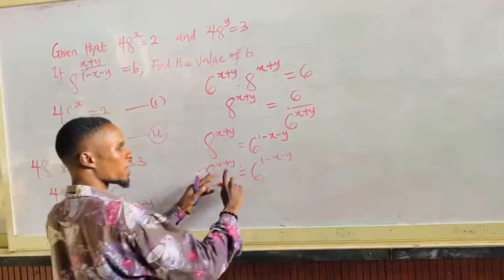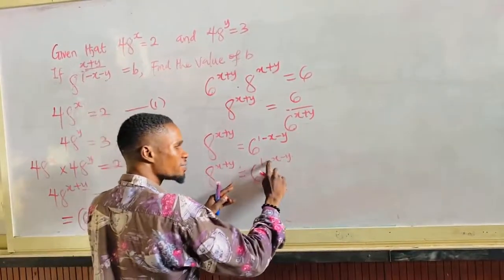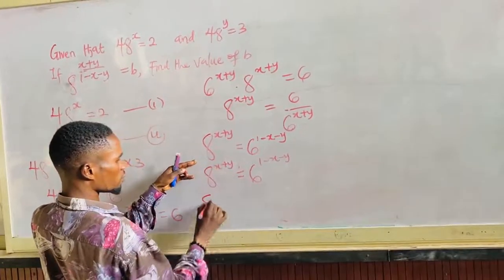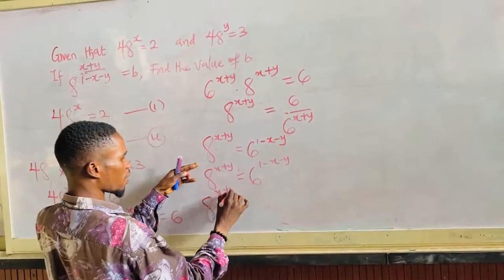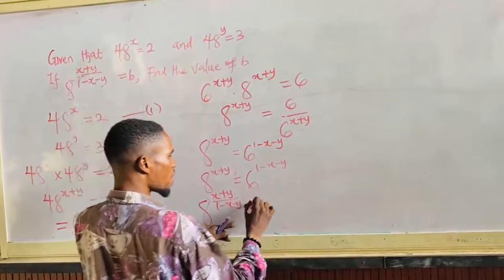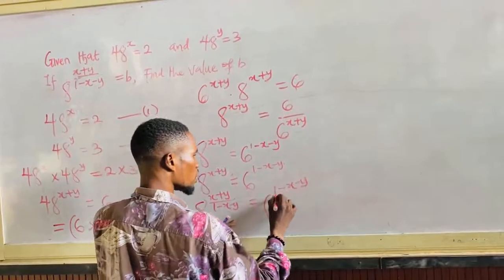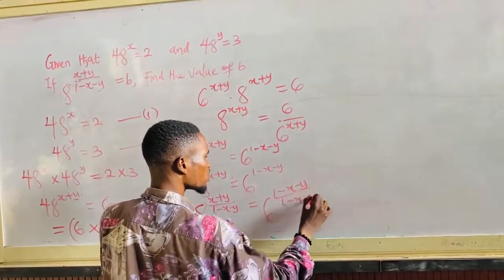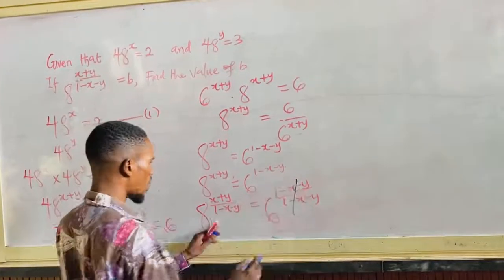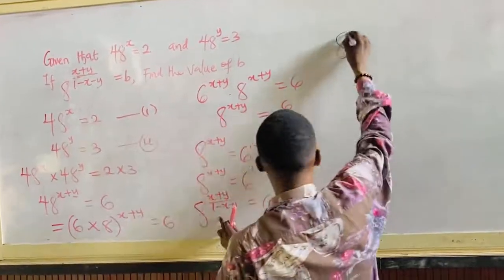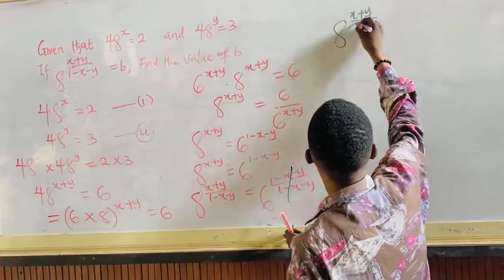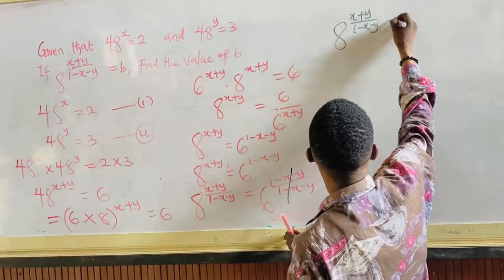Now I can take the power here at the denominator by dividing the power by 1 minus x minus y. So divide the power by 1 minus x minus y on both sides — the power over 1 minus x minus y. What you have is 8 raised to the power of x plus y all over 1 minus x minus y, which is equal to 6.